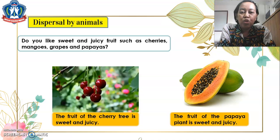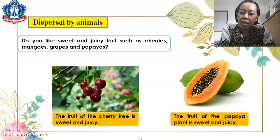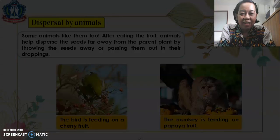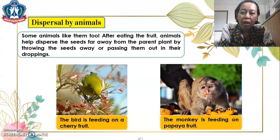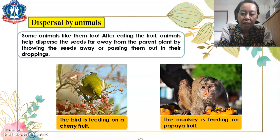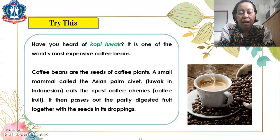Now let's go to dispersal by animals. Do you like sweet and juicy fruits such as cherries, mangoes, grapes, and papayas? The fruit of the cherry tree is sweet and juicy, and the fruit of the papaya plant is sweet and juicy as well. Some animals like them too! After eating the fruit, animals help disperse the seeds far away from the parent plant by throwing the seeds away or passing them out in their droppings. Here, a bird is feeding on a cherry fruit and a monkey is feeding on papaya fruit.